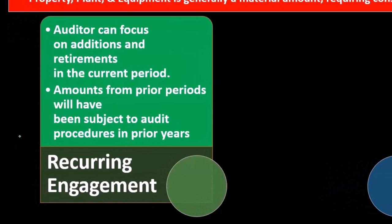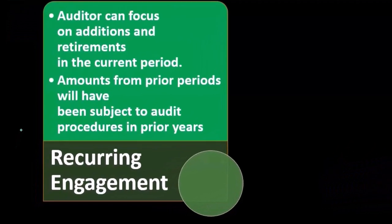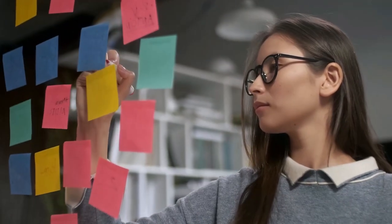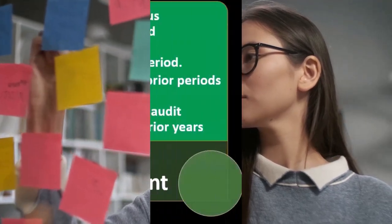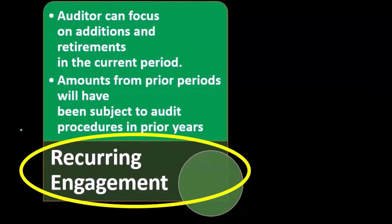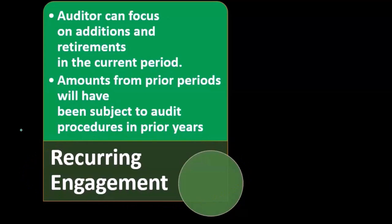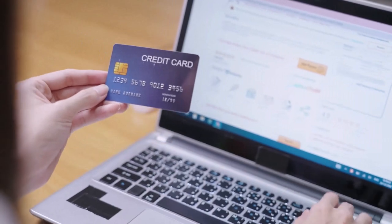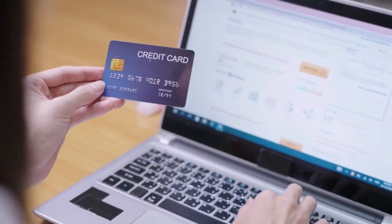There are characteristics of property, plant, and equipment that can make auditing easier in some situations, such as a recurring engagement. Normally we've been auditing the same client for some time, so we can rely to some degree on prior year transactions, because these are long-lived assets from prior years.